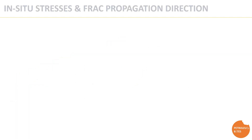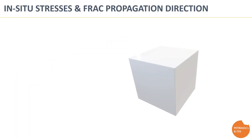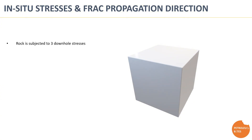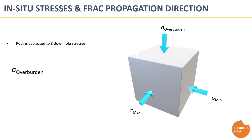To understand frack propagation direction, it's essential to consider in-situ stresses within the rock formation. The rock downhole is subjected to three stresses: the overburden vertical stress, which is the weight of the overlaying rocks, and two horizontal stresses — the maximum and minimum horizontal stress. Generally, in most cases, the vertical overburden stress is the biggest of all downhole stresses. These downhole stresses influence how fractures propagate during the fracking process.